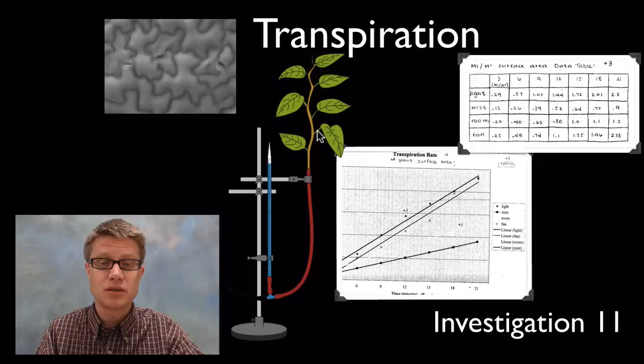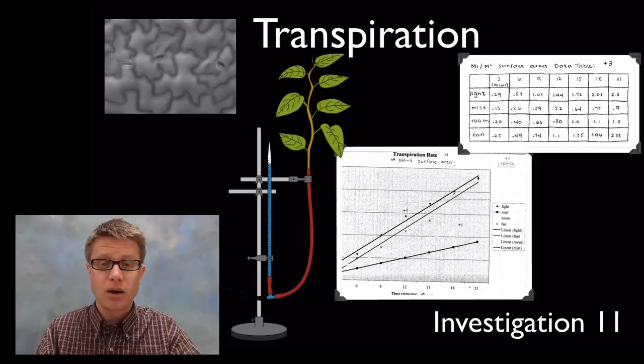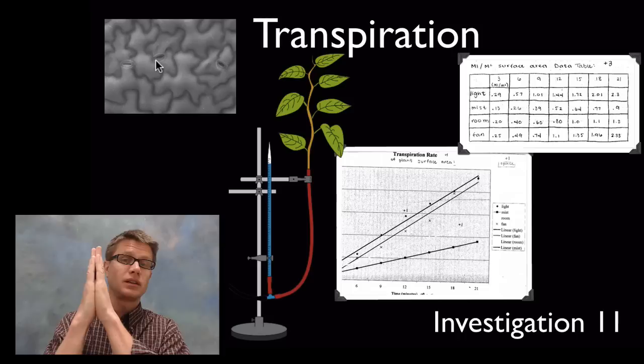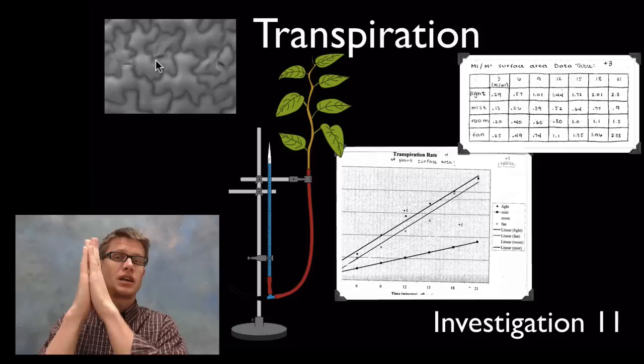Next is transpiration. You're measuring transpiration using a potometer. This is a leaf connected to a tube of water. As water evaporates off the leaf, that water is consumed. We see this side go down. We can measure the rate at which water evaporates off a leaf. How does it evaporate? Through stomata, which are little openings in the leaf. As they open up, more water evaporates. That's a higher rate of transpiration. As they close, it eventually stops.